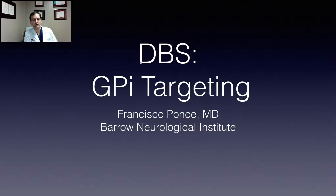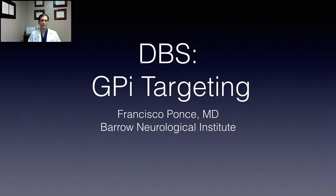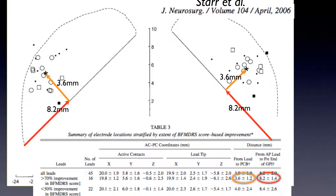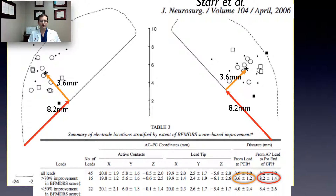Hello, I'm Francisco Ponce. I'm a neurosurgeon at the Barrow Neurological Institute, and in this video I'm going to talk about targeting the globus pallidus interna for deep brain stimulation surgery. I'm going to be walking through the steps on the Framelink software, the surgical planning station made by Medtronic. When I plan a GPI, I rely heavily upon this article by Dr. Phil Starr, showing the sweet spot within the GPI at the mid-commissural plane, where Z equals zero, and in particular this distance of 3.6 millimeters off the internal capsule. I'll use that in my planning of the GPI DBS.